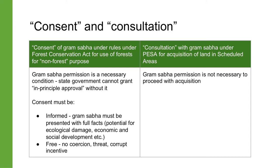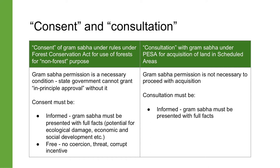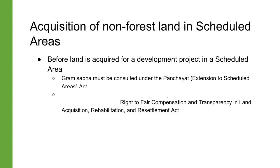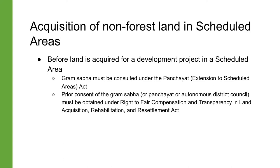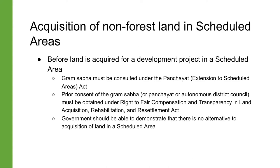Under the PESA law, the permission of the Gram Sabha is not a necessary condition for the acquisition of land in a scheduled area. Consultation, however, requires that the Gram Sabha should be provided with all the information about the project. The Right to Fair Compensation and Transparency in Land Acquisition, Rehabilitation and Resettlement Act 2013 is even stricter. Under that law, the prior consent of the Gram Sabha or Panchayat or Autonomous District Council must be obtained in all cases of land acquisition in scheduled areas. It also requires that the land should only be acquired as a last resort. The government should be able to demonstrate that no other land — particularly land not part of any scheduled area — was available for the same purpose.